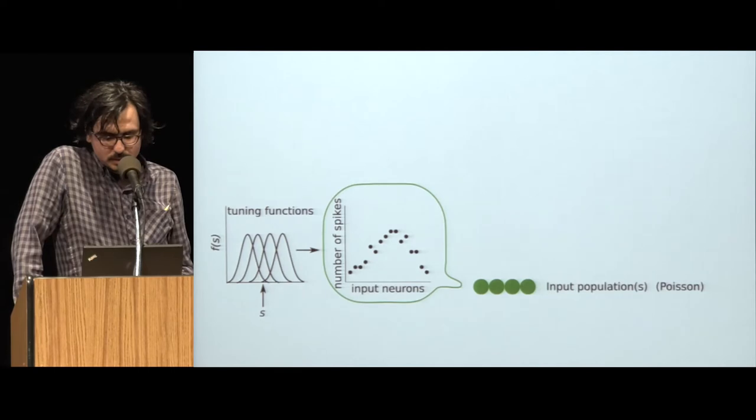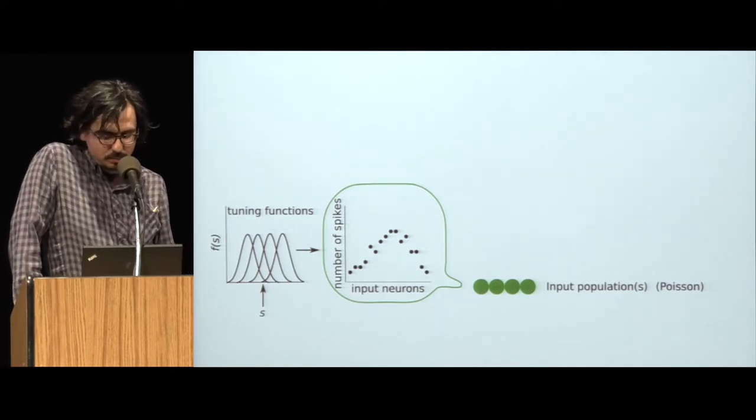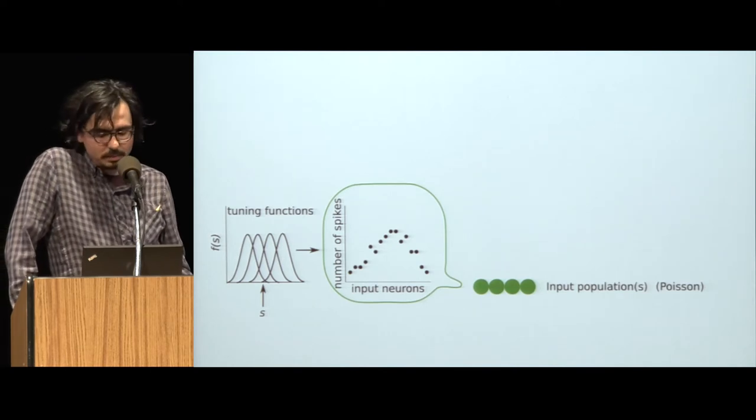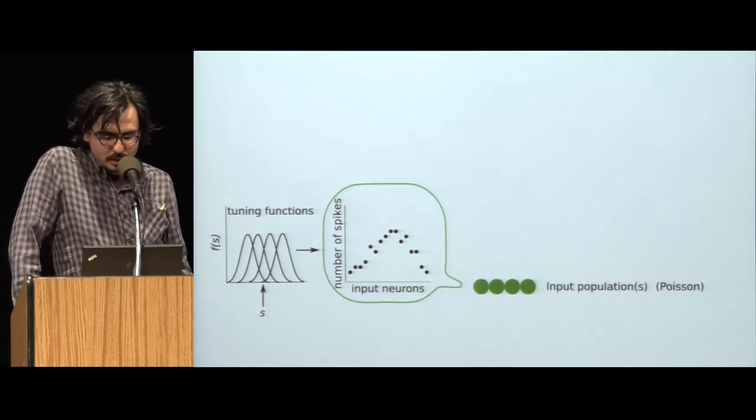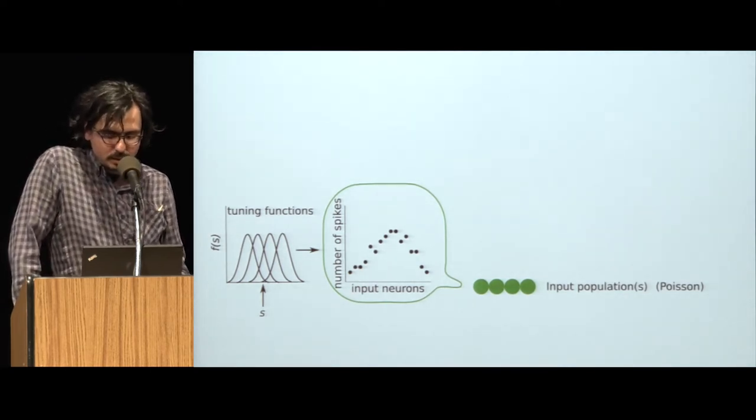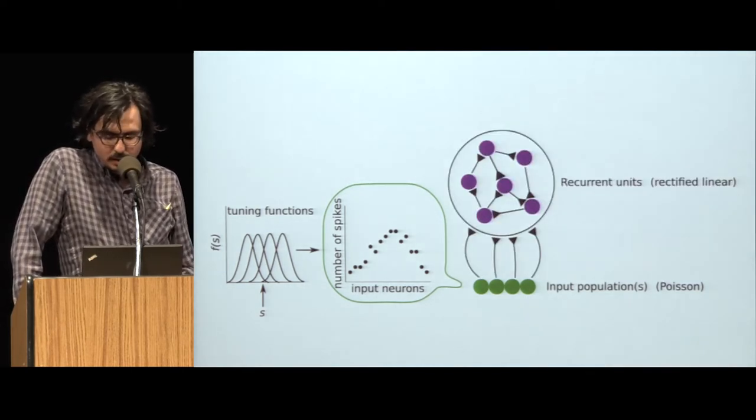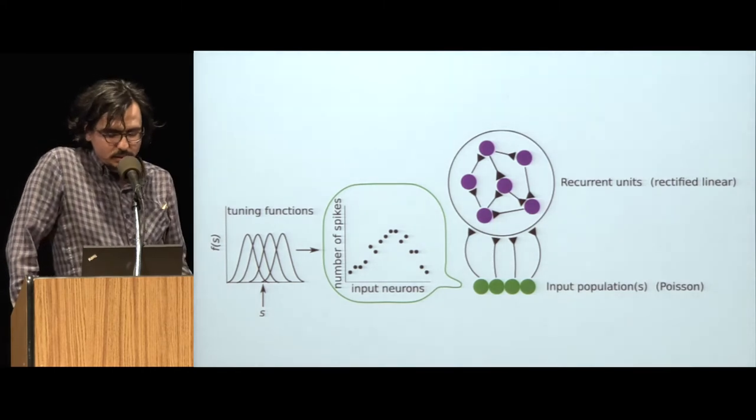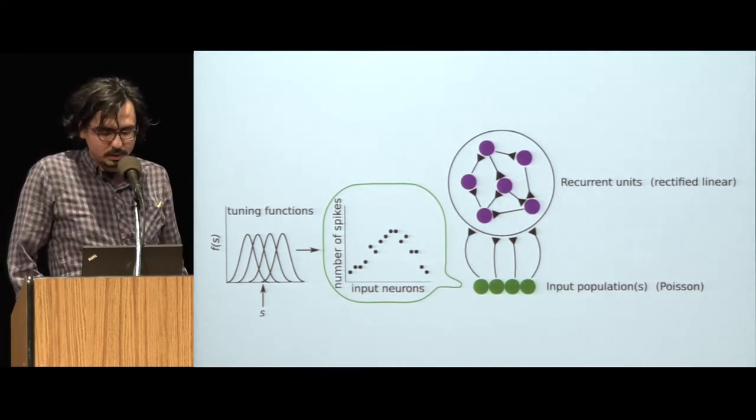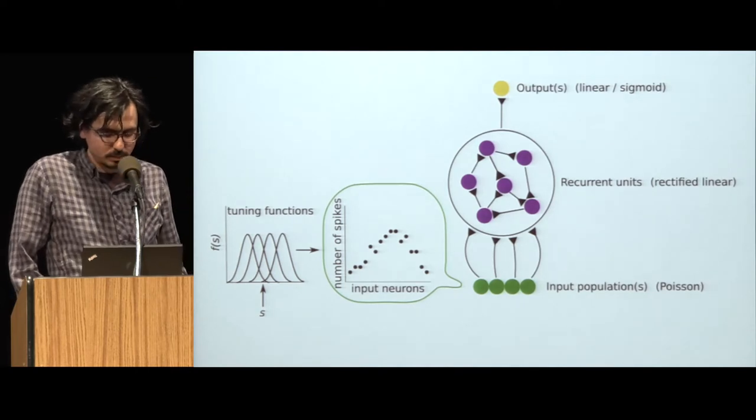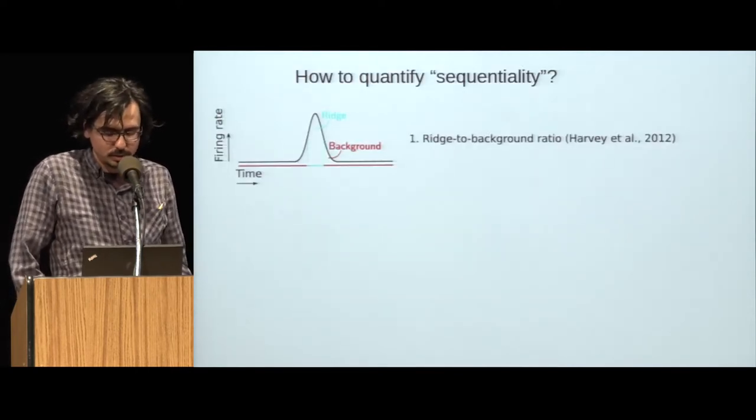Next, I want to describe the neural networks we use. In our networks, sensory information is provided through noisy Poisson populations that consists of stimulus-selective neurons. We assume that inputs are independent both across neurons and across time. These inputs then project onto the recurrent units, which are rectified linear units, and the recurrent units in turn project to the output unit or output units.